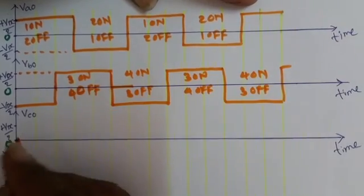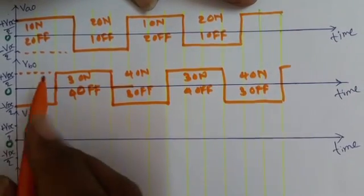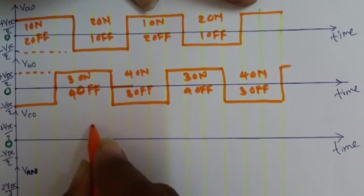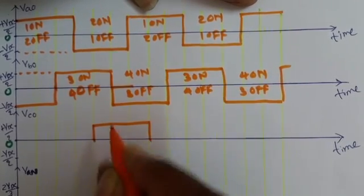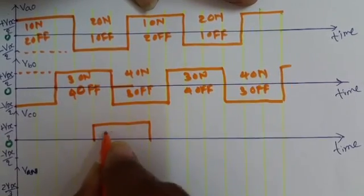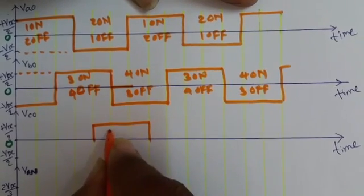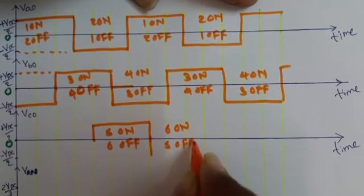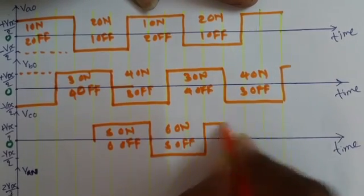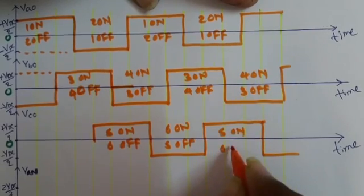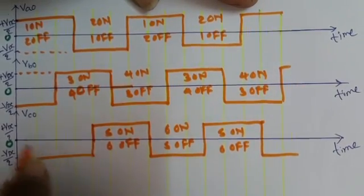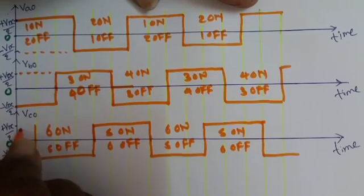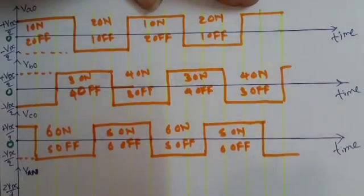For the third wing, V_CO, it should be 240 degrees with respect to V_AO and 120 degrees with respect to V_BO. So it should trigger from there. If switch 5 is on and switch 6 is off, then the output of V_CO will be VDC/2. Then if switch 6 is on and switch 5 is off, output will be minus VDC/2. That is how the output of V_AO, V_BO, and V_CO is coming.